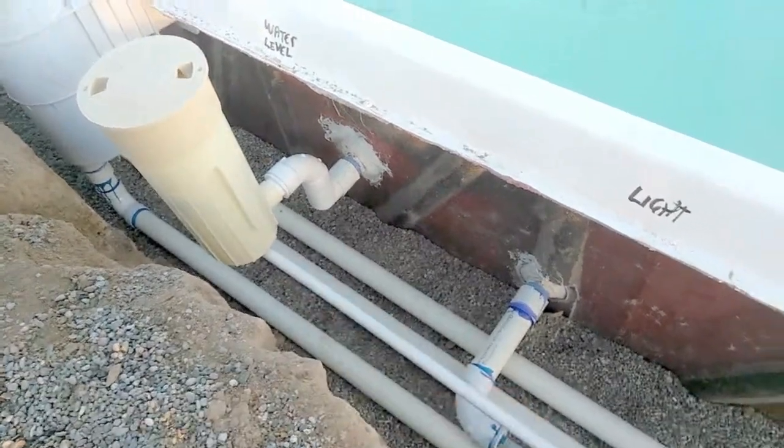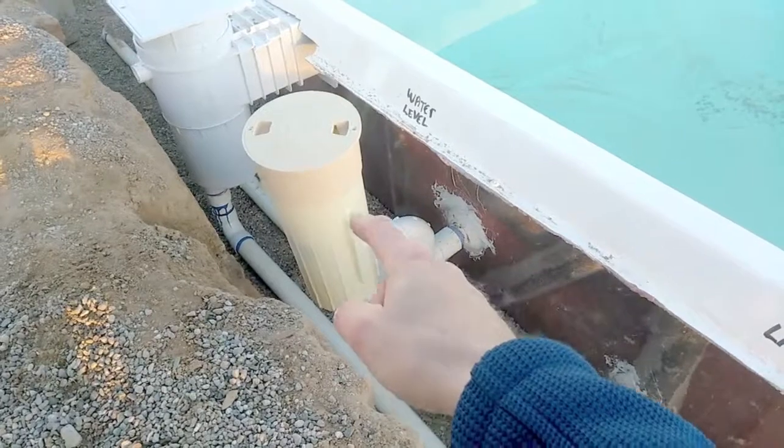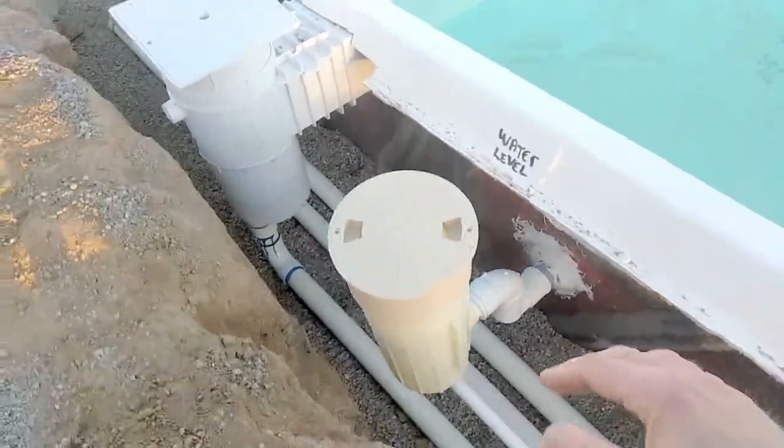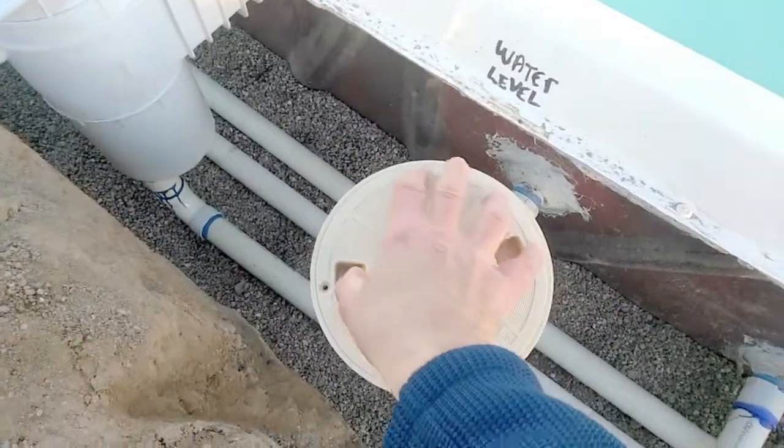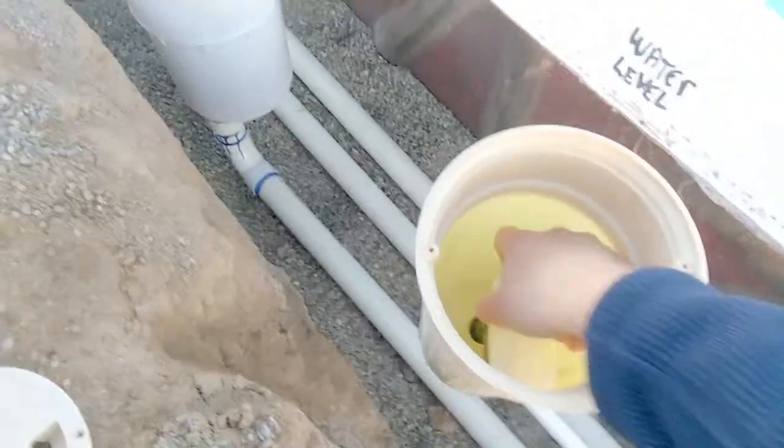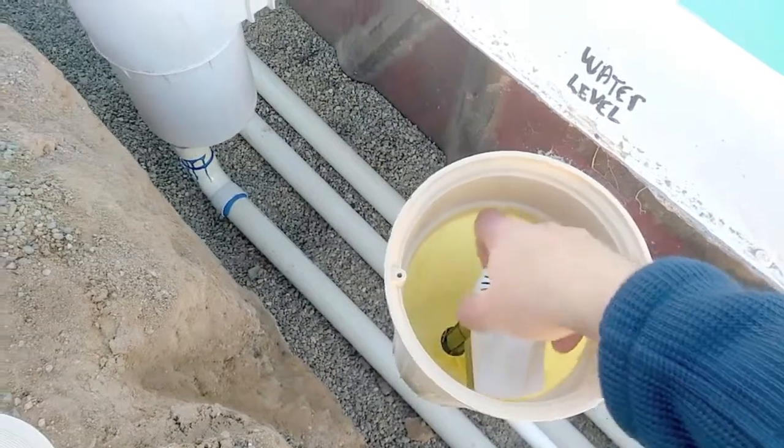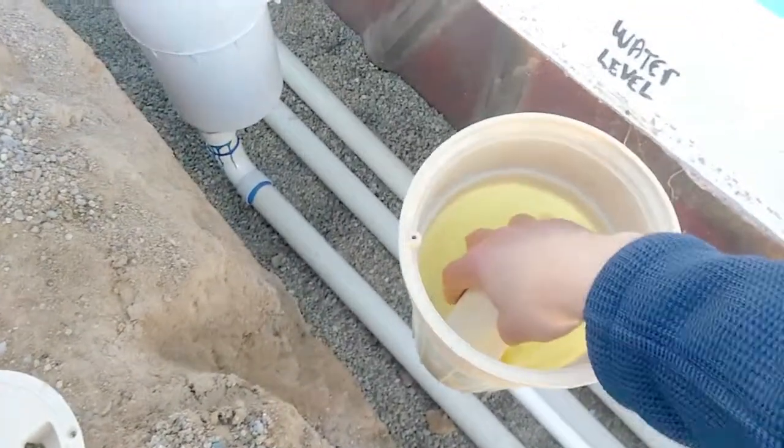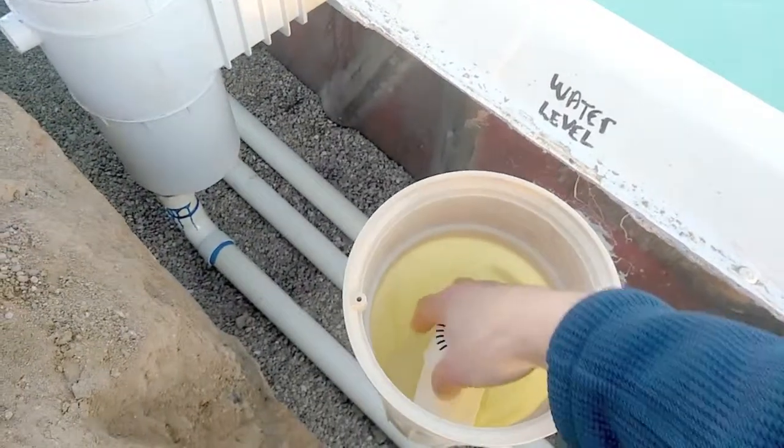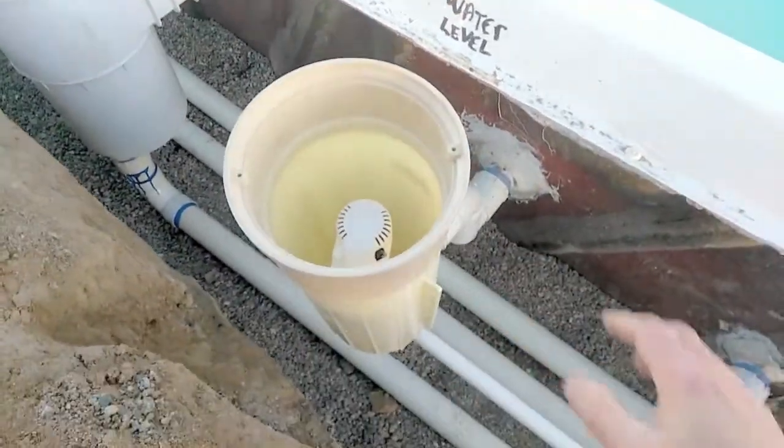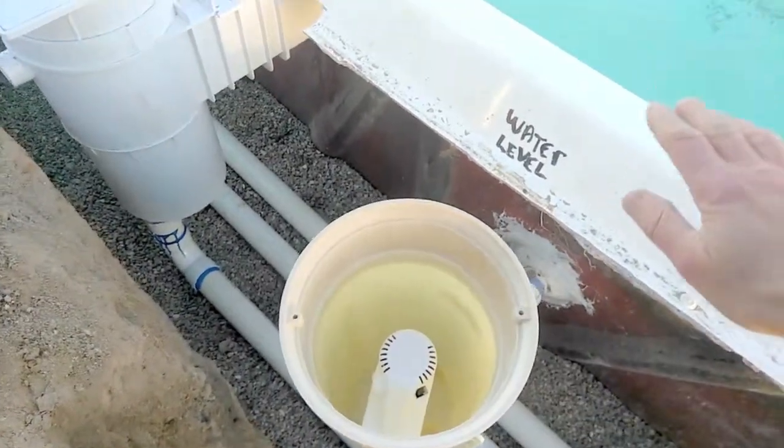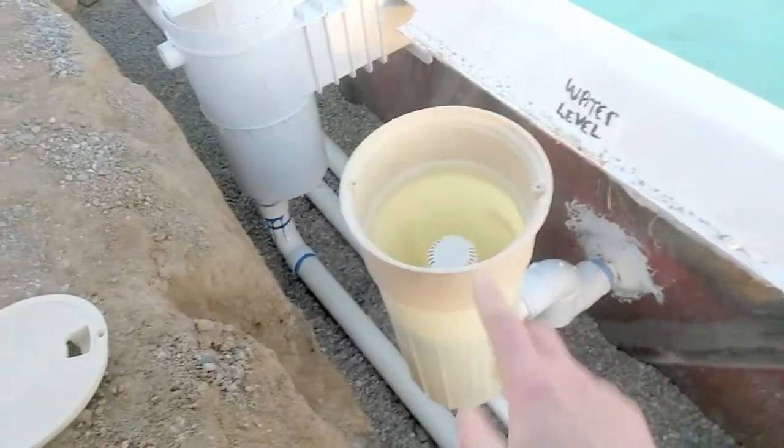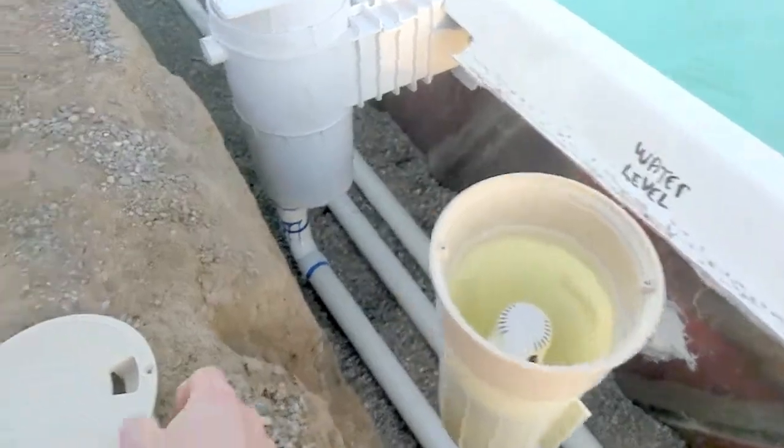It maintains constant pressure, and when the water level drops, this automatically kicks in. It's similar to a toilet system. We can adjust the height where we want the water to be in the pool, and it automatically adds water to maintain that level. The pool is designed for this feature.